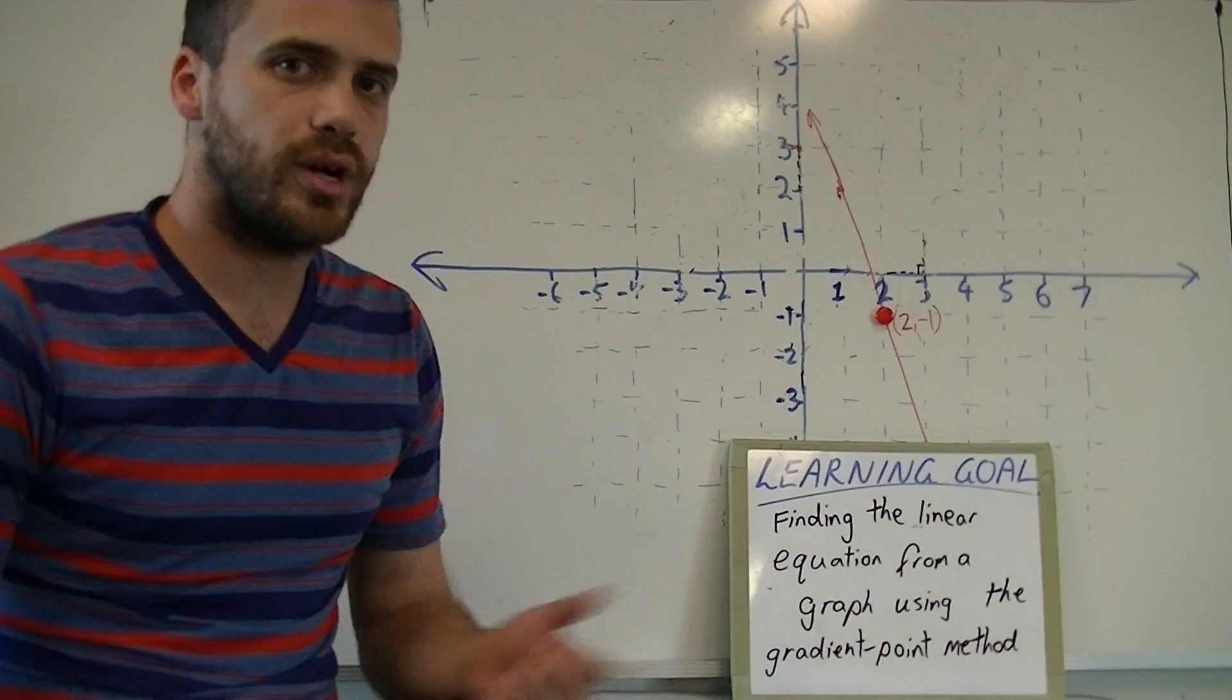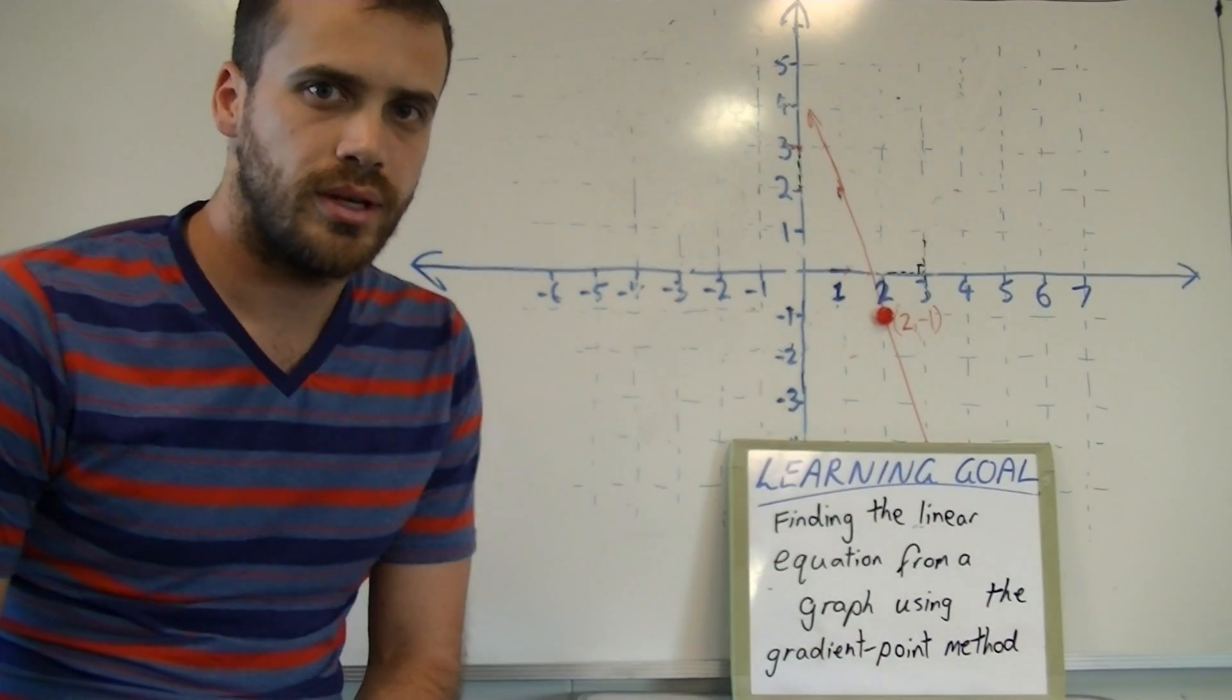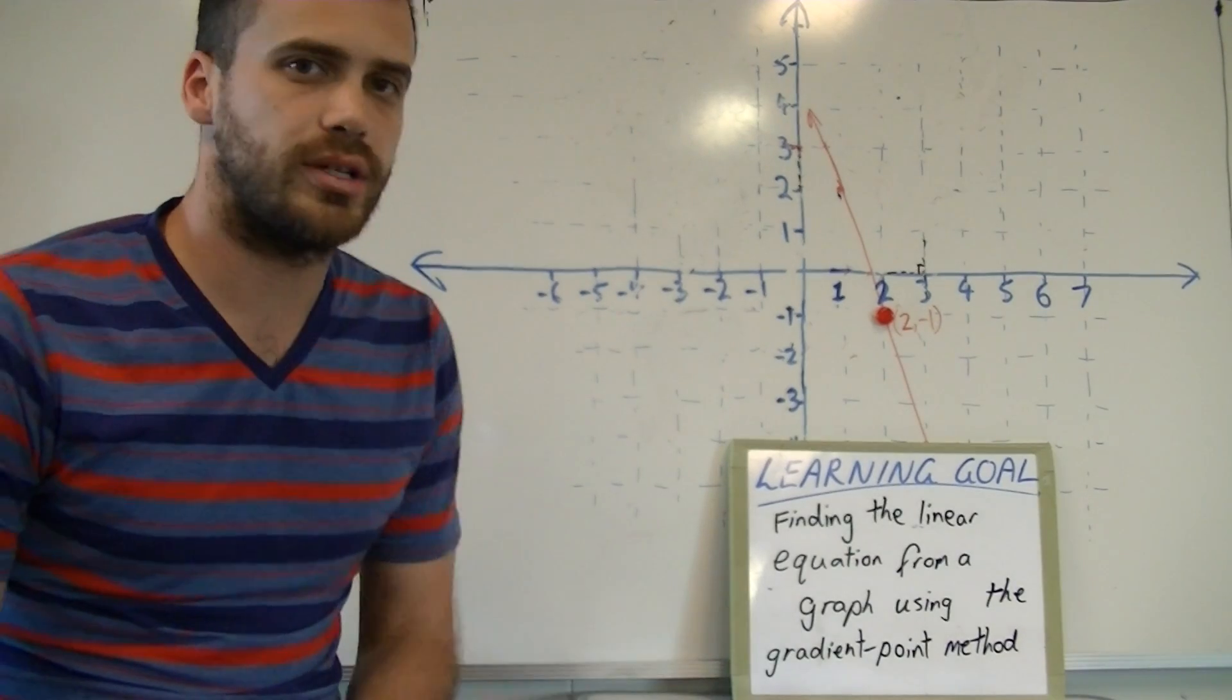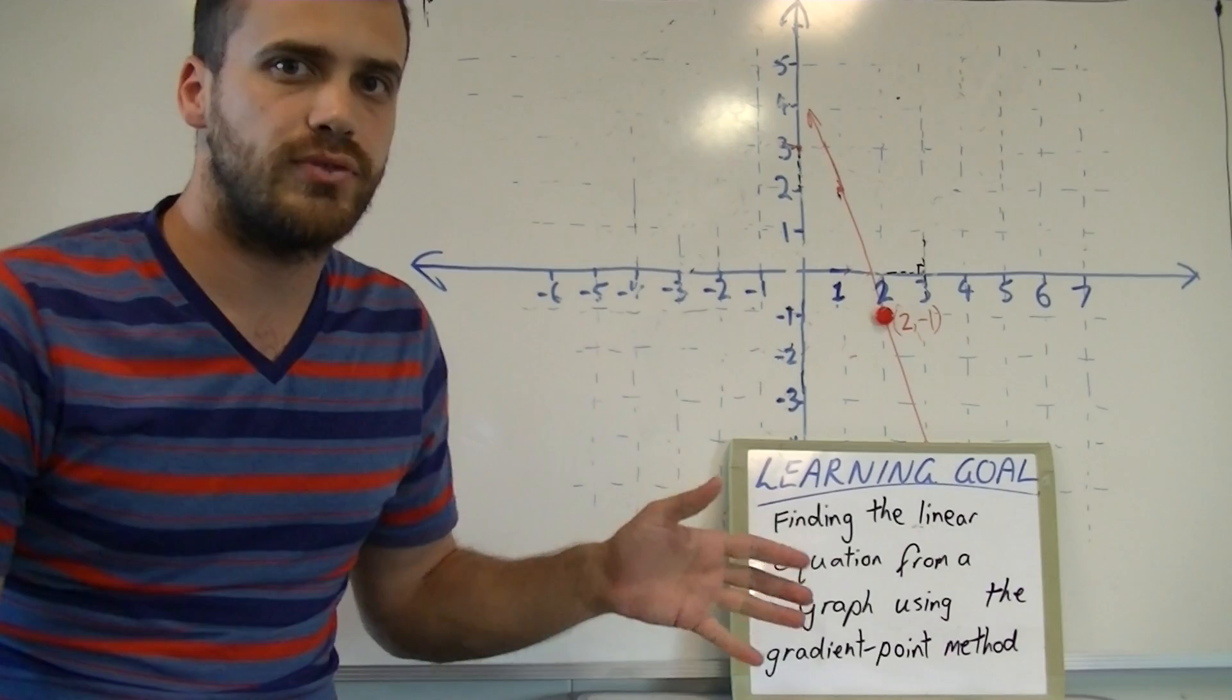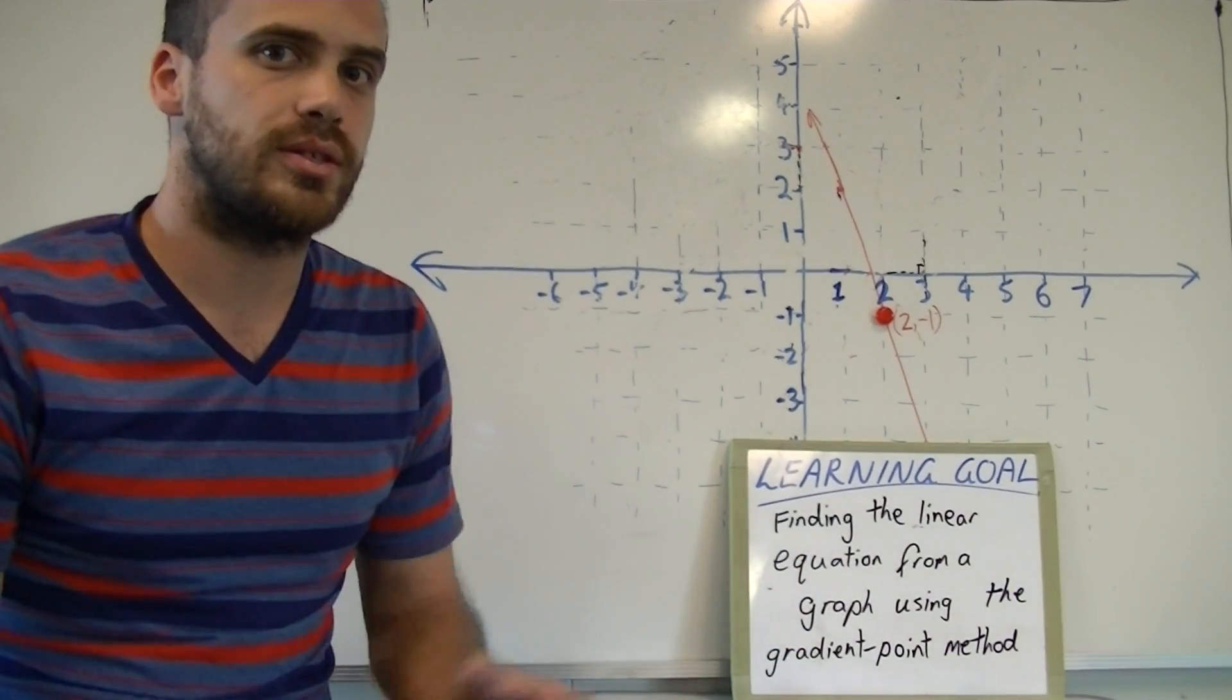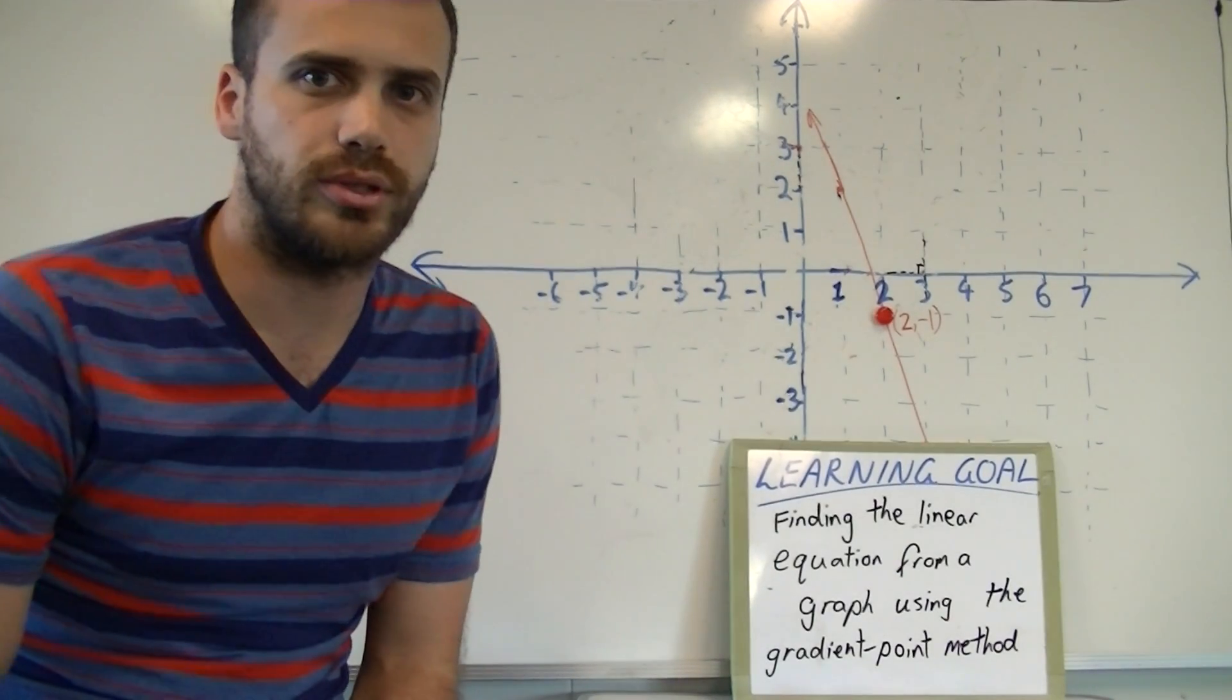In this video we are finding the linear equation from a graph using the gradient point method. This is our second video on finding the equation using the gradient point method. The difference between the last video and this video is that this is going to pop up with a lot of negatives that are going to make your algebra a little more difficult.